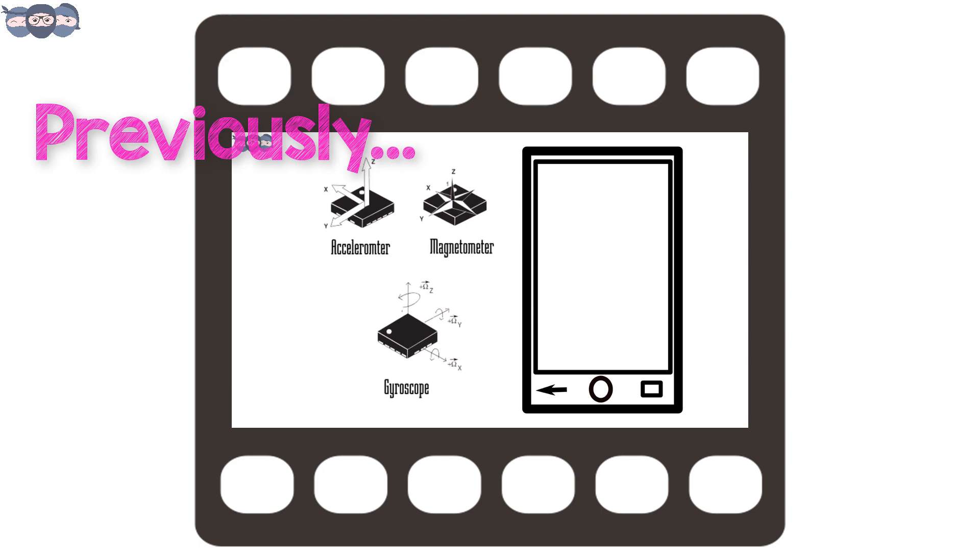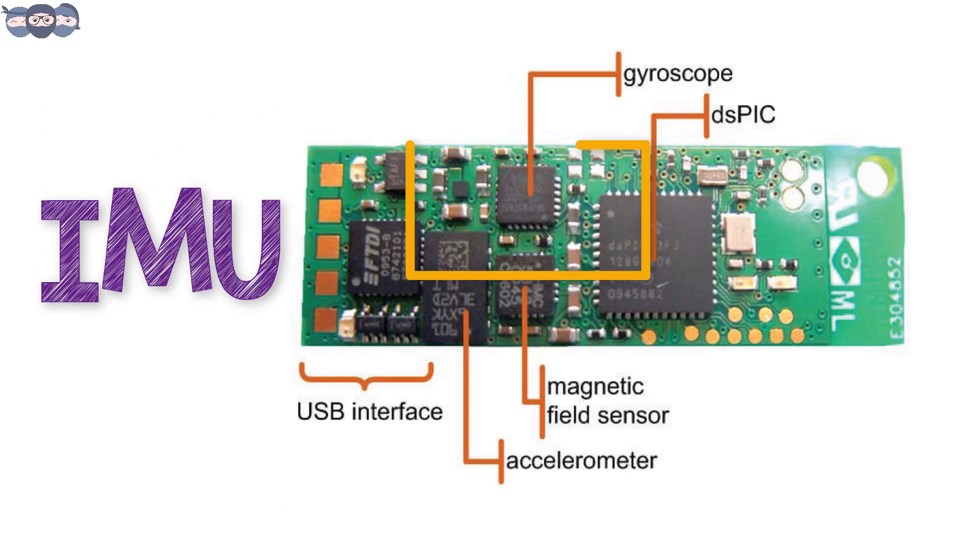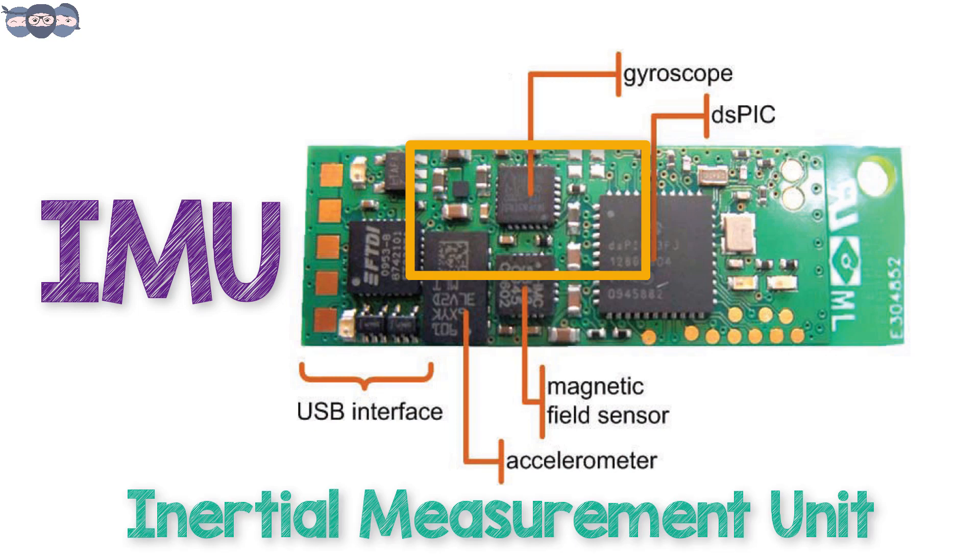The gyroscope is one of the sensors found inside an IMU, that is an inertial measurement unit.